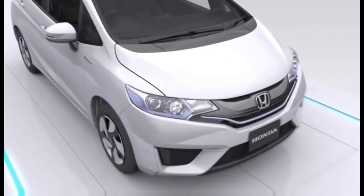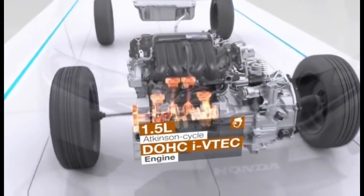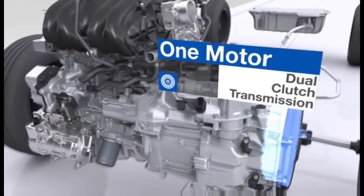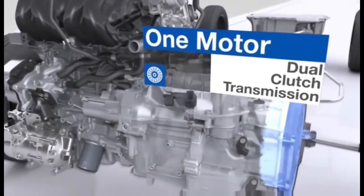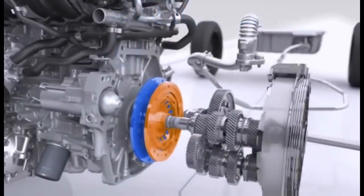Coasting and braking: When approaching a stop, allow the transmission to downshift and decelerate naturally. This helps preserve the clutches and reduces wear on the transmission. Avoid excessive engine braking, which can put extra strain on the transmission and clutches. Use the brake pedal instead.